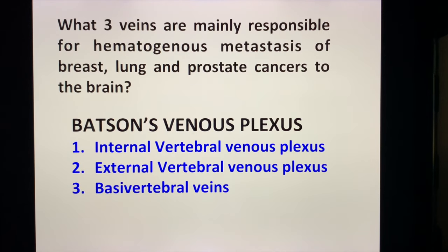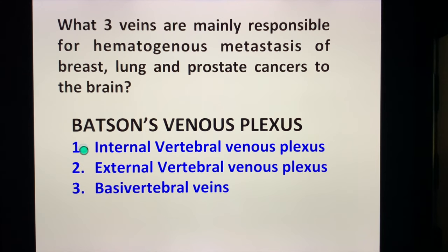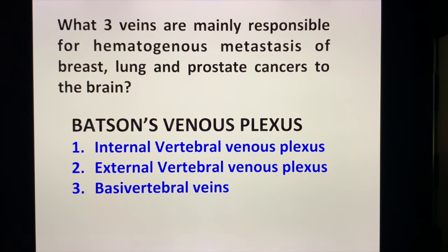Why is the Batson's plexus important? Because the Batson's plexus is comprised of three veins: the internal vertebral venous plexus, the external vertebral venous plexus, and the basivertebral veins. This entire structure — the Batson's venous plexus — is responsible for the hematogenous metastasis of cancers to the brain and vertebral column. These three cancers would be breast, lung, and prostate. This explains why breast, lung, and prostate cancer would metastasize to the brain as well as the vertebral column.